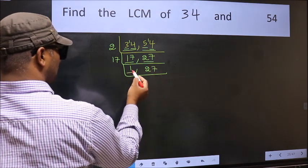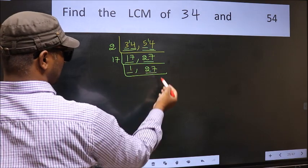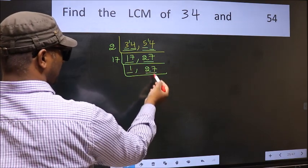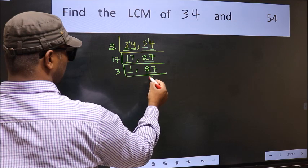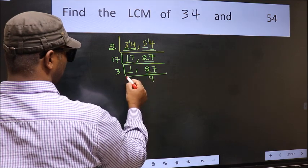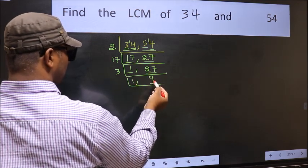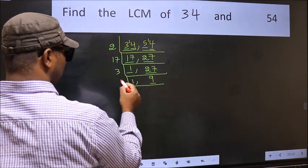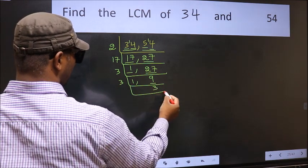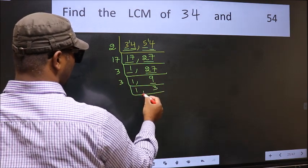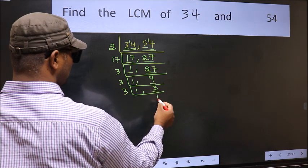Now we got 1 here, so focus on the other number 27. 27 is 3×9 = 27. Now we have 9; 9 is 3×3. Now we have 3; 3 is a prime number, so 3×1 = 3.